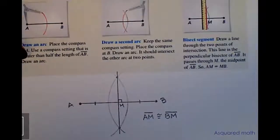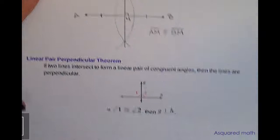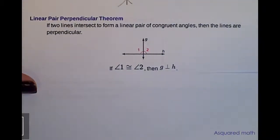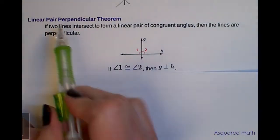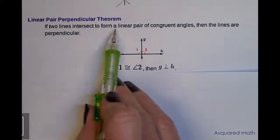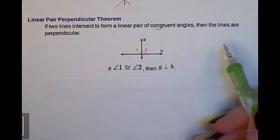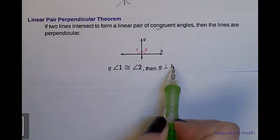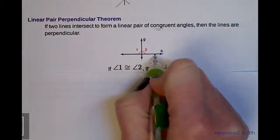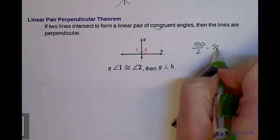Now that we've talked about perpendicular lines and how to construct them, we're going to talk about a few theorems. The first is the linear pair perpendicular theorem. We know linear pairs are two adjacent angles that form a straight line. This theorem is more specific: if two lines intersect to form a linear pair of congruent angles, then the lines are perpendicular. Congruent is the key word — angle one must be congruent to angle two. Therefore line G is perpendicular to line H because if the total is 180° and they're congruent, 180 divided by 2 is 90°, making them perpendicular.